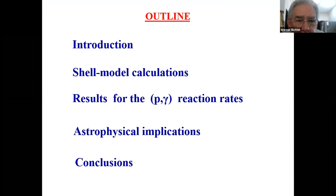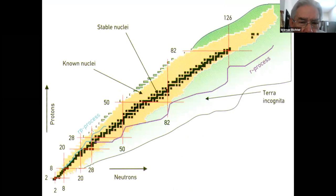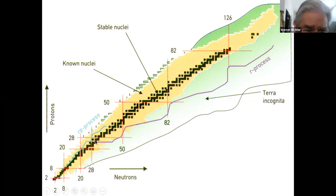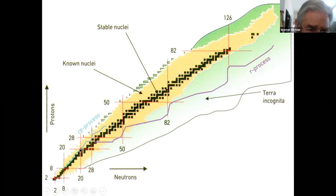Just a brief introduction of where I'm going to run through. If we look basically at this NZ diagram, we've seen yesterday and today quite often the RP process running along here — sequential neutron absorption in very high density, high temperature environments — but the RP proton p-gamma process runs along this area close to the proton drip line.